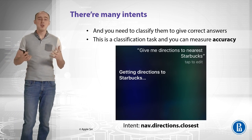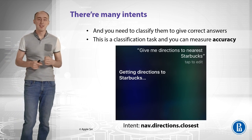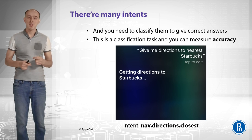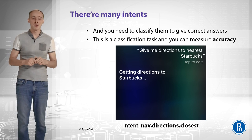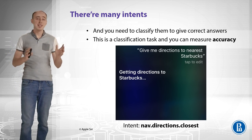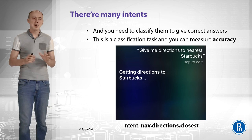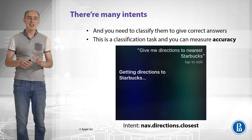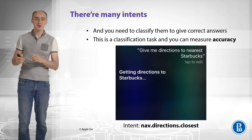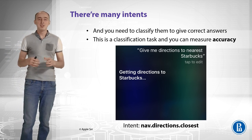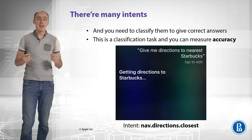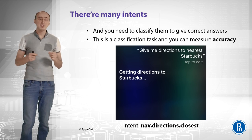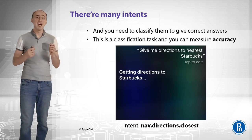I can ask Siri a different question: 'Give me directions to nearest Starbucks.' This time I don't care about how long it takes, I just need the directions. Siri gives me directions on the map. This is a different intent — 'navigation_directions_closest.' You need to classify different intents and distinguish between them. This is a classification task and you can measure accuracy here.